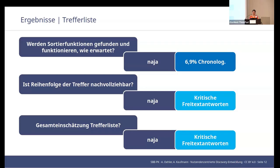Is the sequence of hits comprehensible? The response was 'sort of,' with critical answers also in the online survey. The overall assessment of the hit list was okay, but there is certainly still room for improvement. Obstacles identified included: without scrolling you can only see the first two to four hits in the list, and the relevance ranking is less than convincing.